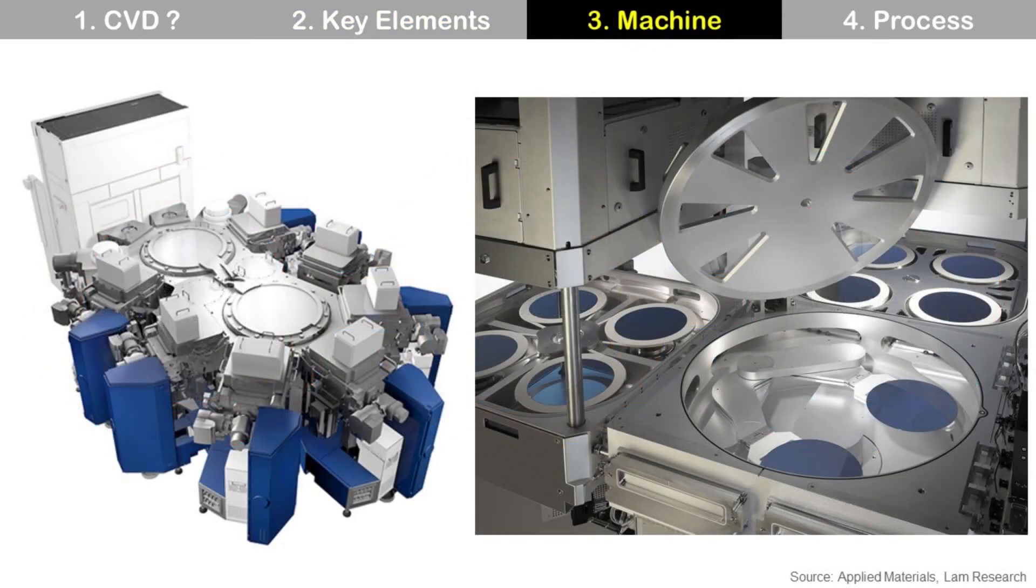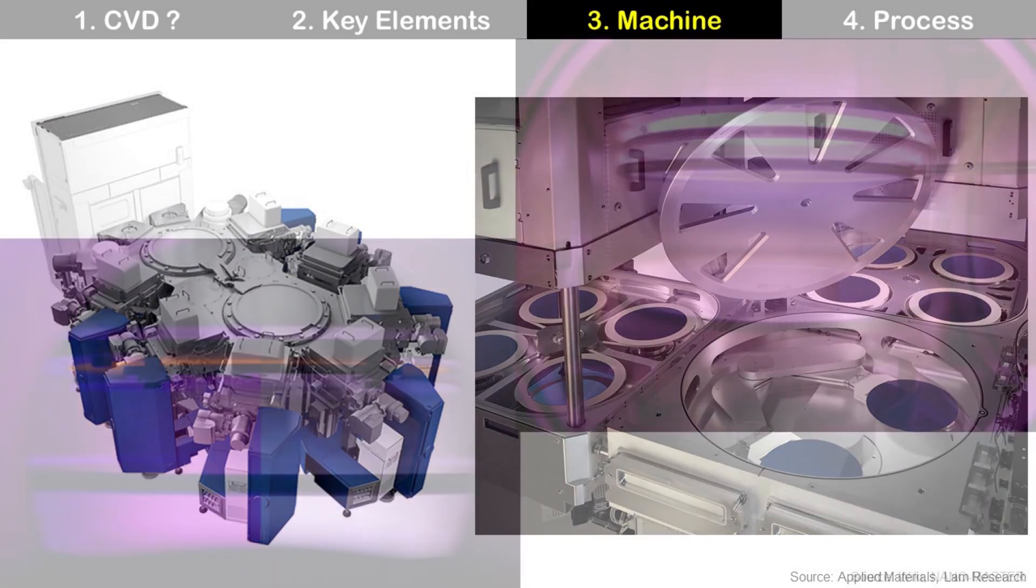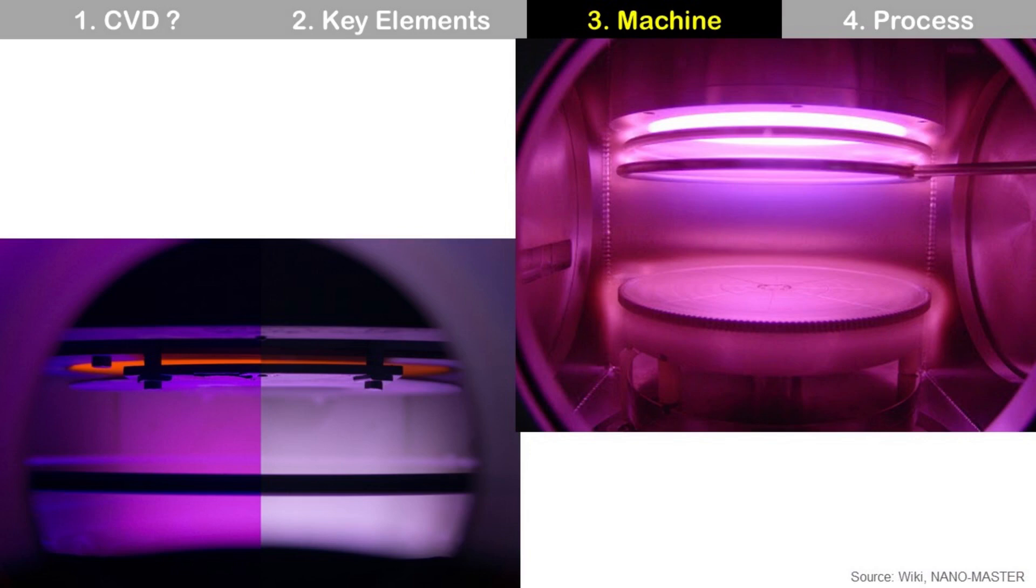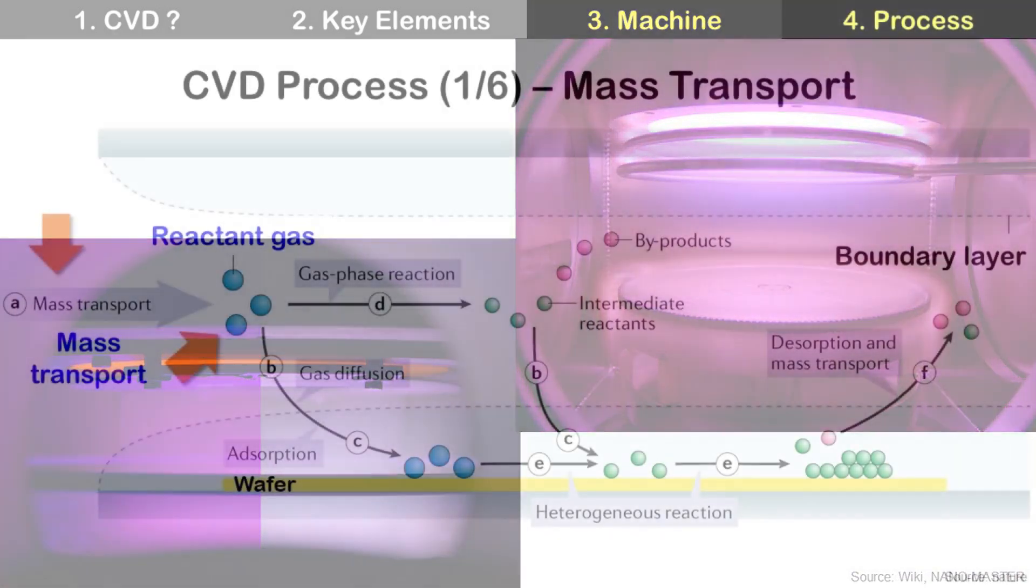CVD machine looks like this at the left, and it is CVD machine from Applied Materials. Inside of CVD looks like this at the right, and it is PECVD machine from LAM Research. If you look at the inside of PECVD vacuum chamber, we can see plasma like this.